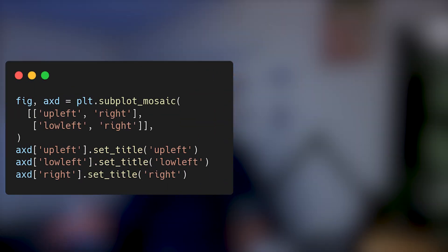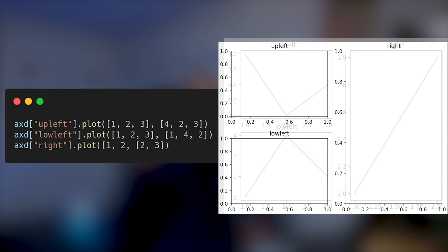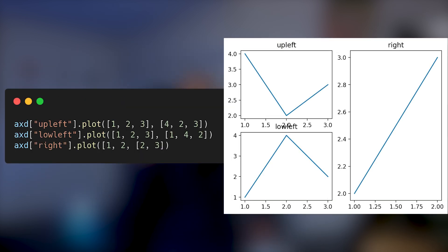For example, if you build subplots in Matplotlib, you're going to get each region as an axis object on which to plot a particular graph.